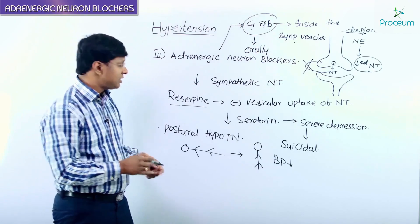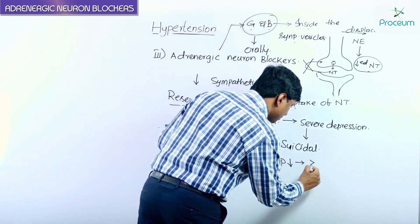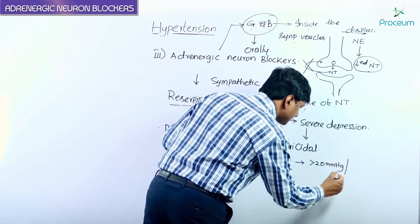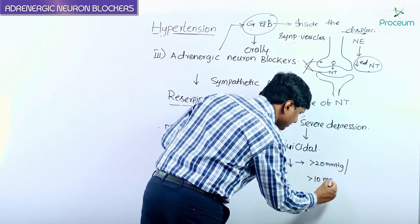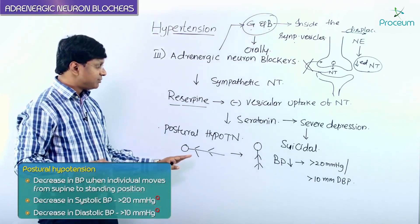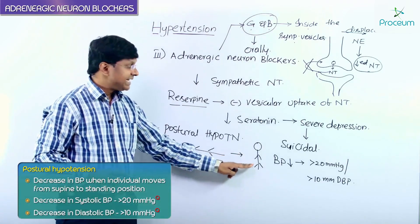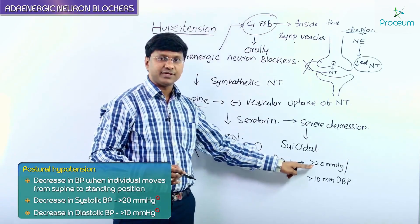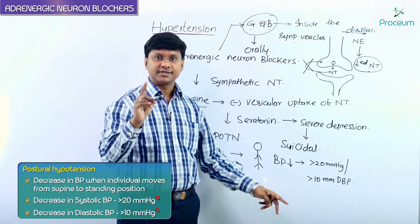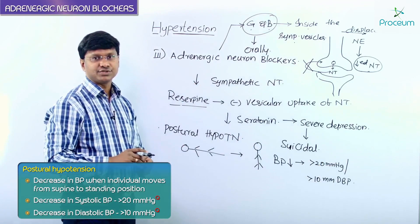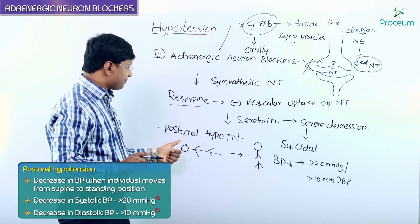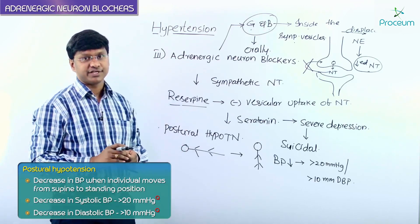The fall in blood pressure is more than 20 millimeters of mercury systolic blood pressure. When the individual moves from supine to standing position and blood pressure falls more than 20 mmHg systolic and more than 10 mmHg diastolic blood pressure, this is called postural hypotension. Remember, prolonged use of guanethidine and bretylium will result in postural hypotension.